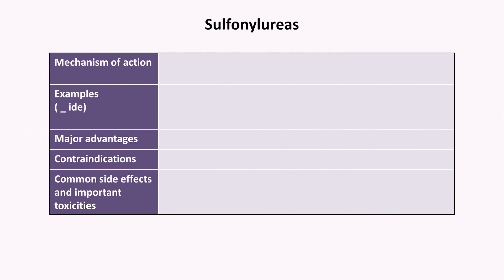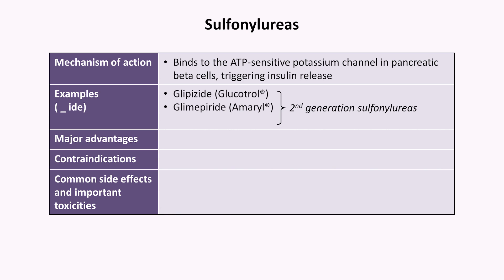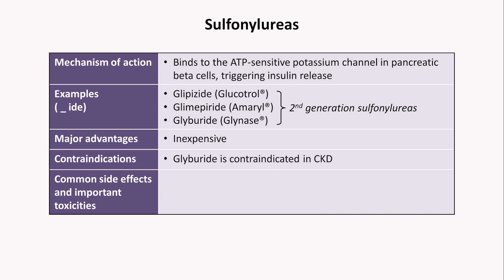The last class discussed individually are the sulfonylureas. These bind to the ATP-sensitive potassium channel in pancreatic beta cells, triggering insulin release. Virtually all sulfonylureas currently used are second-generation, including glipizide, glimepiride, and glyburide. Their major advantage is low cost. Glyburide is contraindicated in chronic kidney disease. The reason these drugs are near the end of the list, despite an established track record of effective glycemic control, is that they cause weight gain and have the highest risk of causing hypoglycemia among non-insulin treatments.